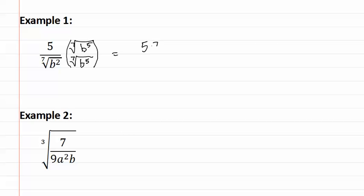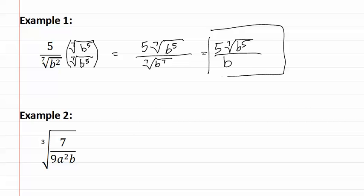This gives us five seventh root of b to the fifth over the seventh root of b to the seventh. Now as you can see, the b to the seventh will come out as just a b and we have five seventh root of b to the fifth in the numerator. This is our final answer, as there is no radicals in the denominator.